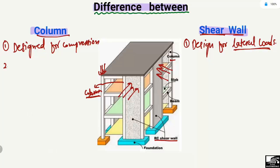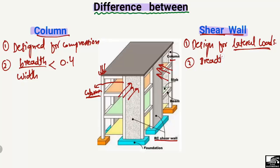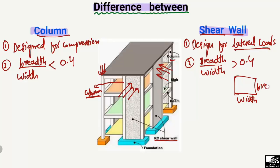The second main difference is the breadth-to-width ratio. For a column, the breadth-to-width ratio should always be less than 0.4, while for a shear wall this ratio should always be greater than 0.4. From this we can differentiate whether our structural member is a column or a shear wall — if the ratio is greater than 0.4 we call it a shear wall, if it is less than 0.4 we call it a column.